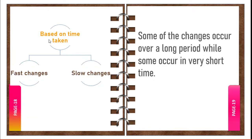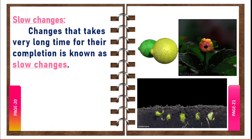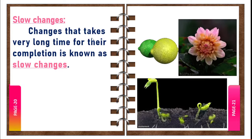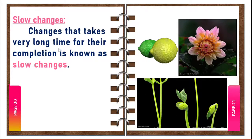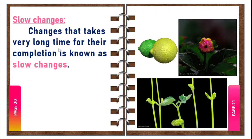We are going to discuss changes based on time taken. Some changes occur over a long period while some occur in a very short time. Based on the time taken, we can classify changes into two types: fast changes and slow changes. Changes that take a very long time for their completion are known as slow changes.